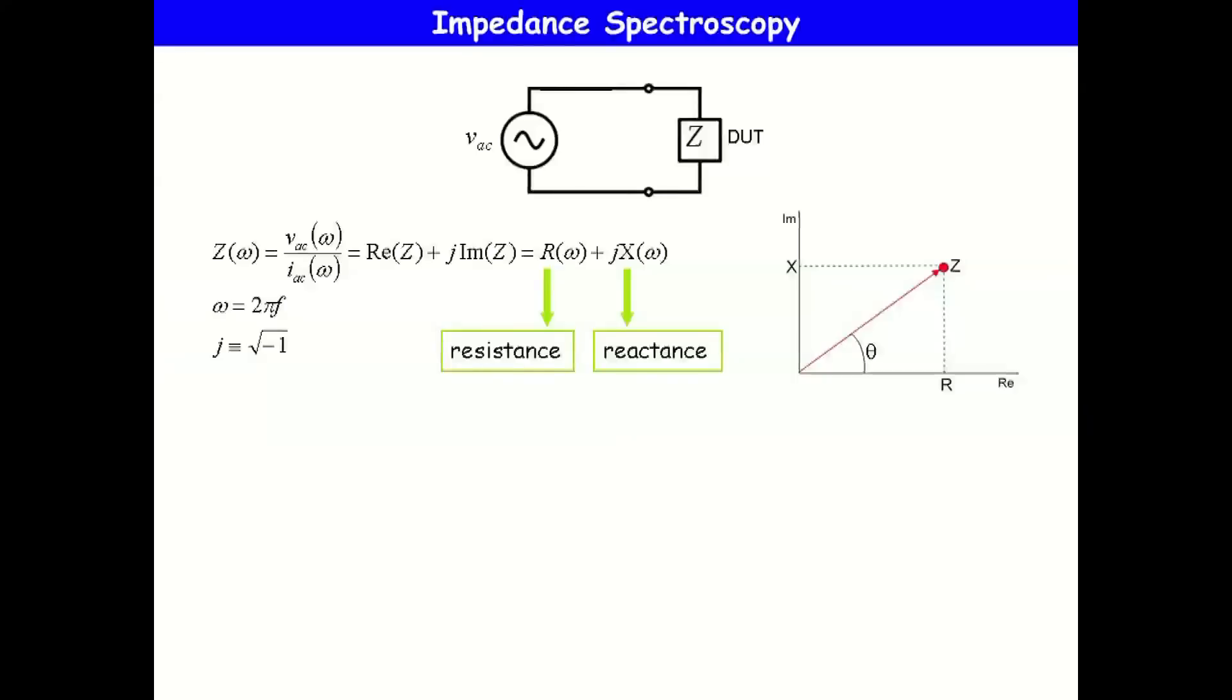In an impedance experiment, the charge relaxation driven by a small harmonic voltage modulation is probed. The amplitude and the phase difference of the corresponding alternating current are monitored as a function of frequency. Frequency is varied in order to attain a spectrum and usually direct bias is superimposed to the harmonic voltage modulation. The electrical behavior of the device is modeled in terms of equivalent circuits of resistors and capacitors.